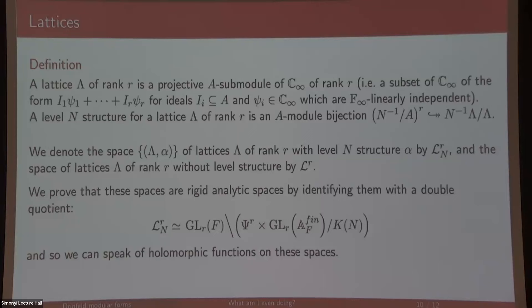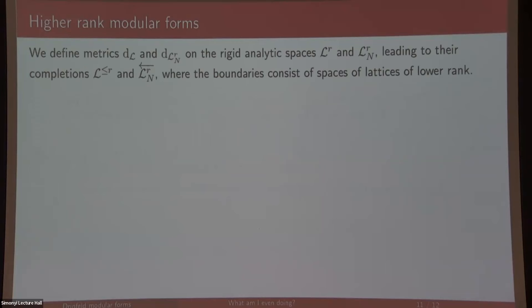We need a definition of what it means to be holomorphic, we need to say that it's homogeneous of weight negative k, and the last condition is some kind of condition when it goes to the cusps. The way I handled it is by defining metrics on the spaces of lattices with level structure or without. Once you have a metric you can take the completion.